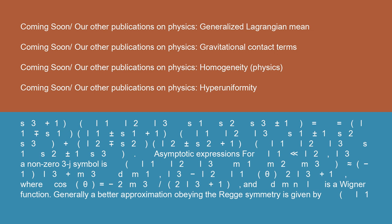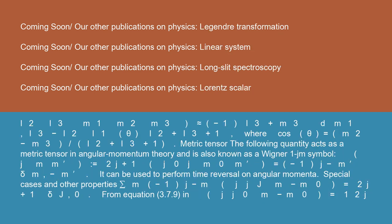Asymptotic expressions for L1 << L2 ≈ L3 and non-zero 3J symbol is (L1 L2 L3; M1 M2 M3) ≈ (-1)^(L3+M3) * d^{L1}_{M1,L3-L2}(θ) / √(2L3 + 1), where cos(θ) = -2M3/(2L3 + 1) and d^L_{MN} is a Wigner function. Generally a better approximation obeying the Regge symmetry is given by (L1 L2 L3; M1 M2 M3) ≈ (-1)^(L3+M3) * d^{L1}_{M1,L3-L2}(θ) / √(L2 + L3 + 1), where cos(θ) = (M2 - M3)/(L2 + L3 + 1).